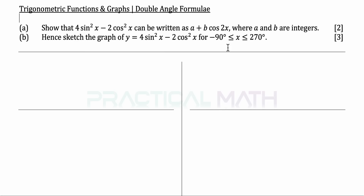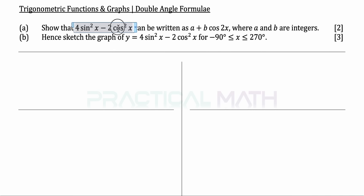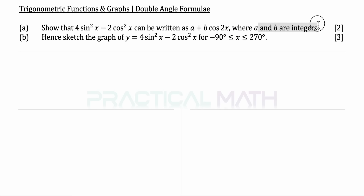Hey there. In this video we will be discussing trigonometric functions and graphs, as well as the double angle formula. In part A of the question, show that 4sin²x minus 2cos²x can be written in the form a plus b·cos2x, where a and b are integers. That is a 2-mark question.